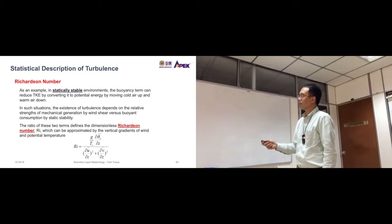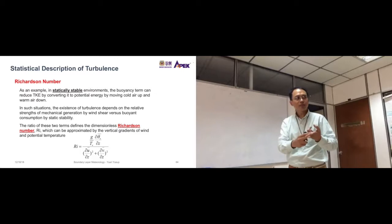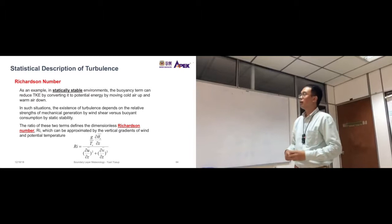So in such situations the existence of turbulence depends on the relative strength of mechanical generation by wind shear. I know that there's two types of environment in the atmosphere. One is the unstable and there's the stable. For unstable there's more vertical motion. For stable it's less vertical motion. But here they use an example for just the stable environment first and say that if there is no vertical dispersion or vertical movement.